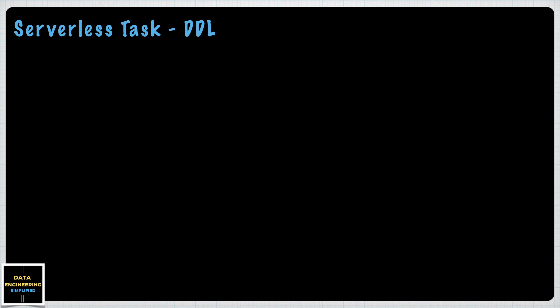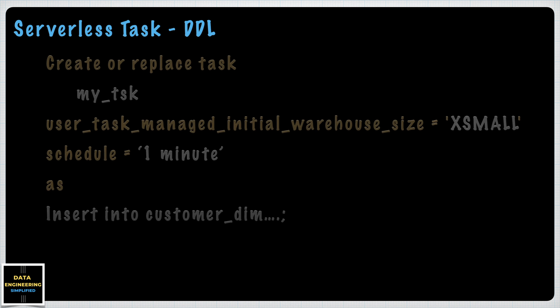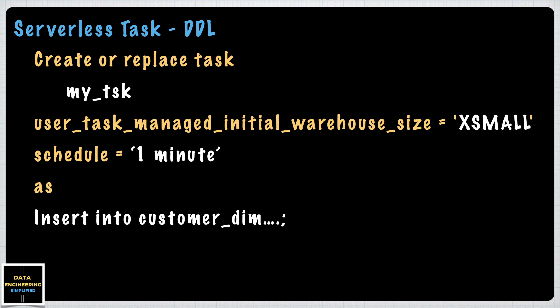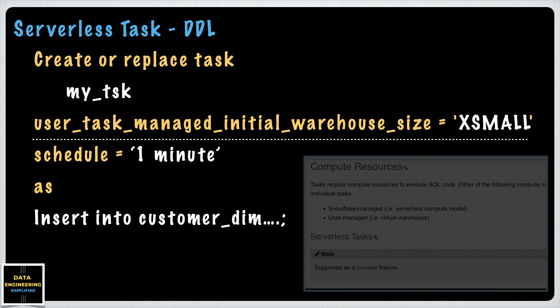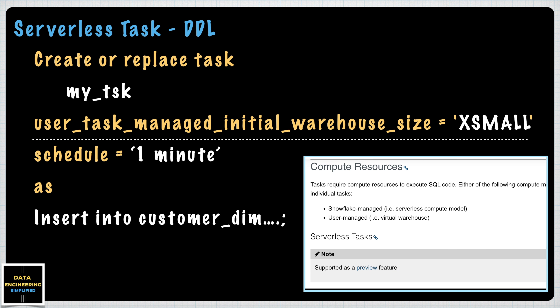What if you don't want to give a user-defined warehouse? In that case you can use a serverless task. The DDL syntax is very similar and the warehouse parameter is replaced by USER_TASK_MANAGED_INITIAL_WAREHOUSE_SIZE, and you give the initial warehouse size. It doesn't mean it will always run with an extra-small warehouse — it will start with extra-small and if it needs more capacity, it will scale to a bigger virtual warehouse. This is called a serverless task in Snowflake and was recently introduced.